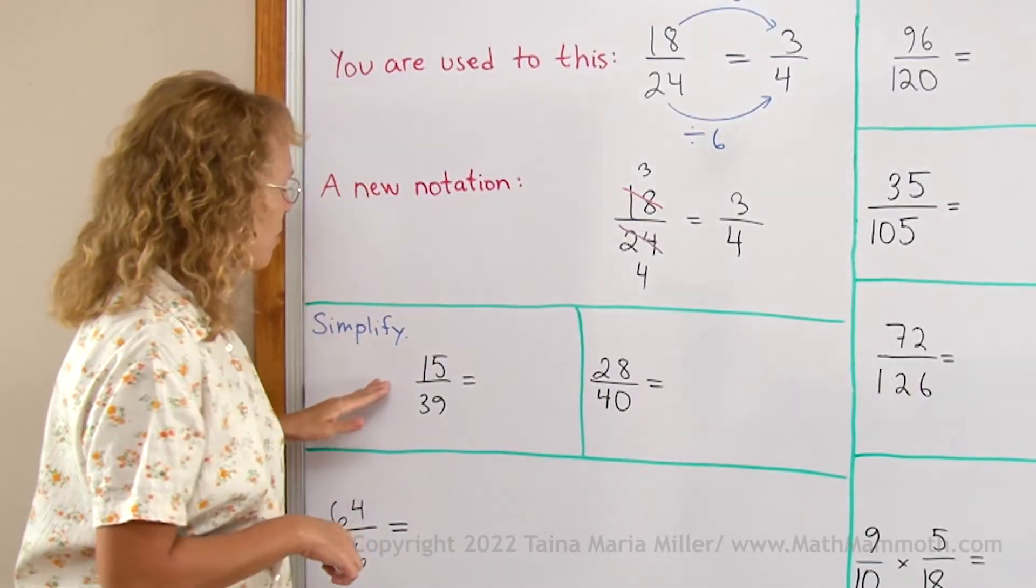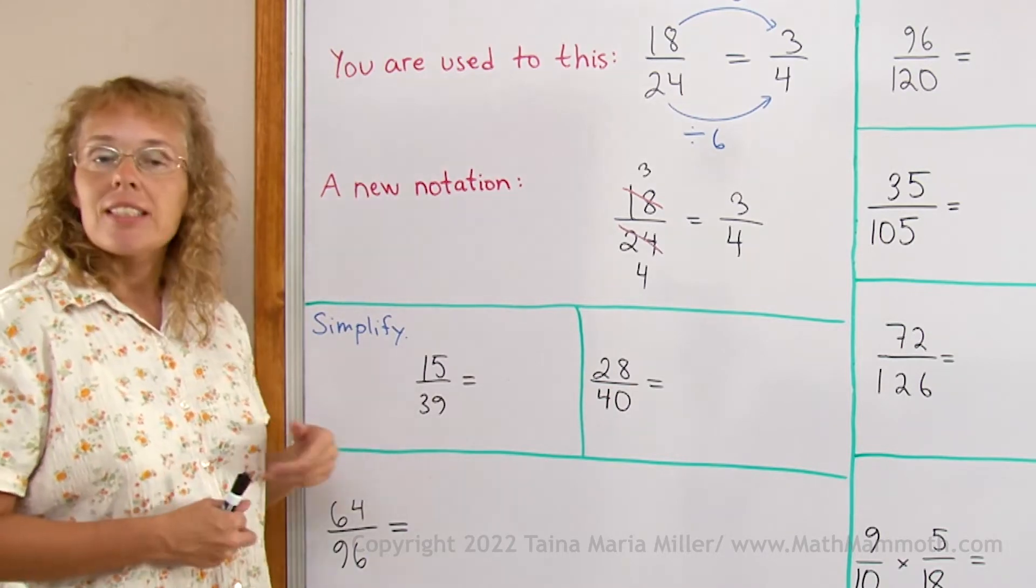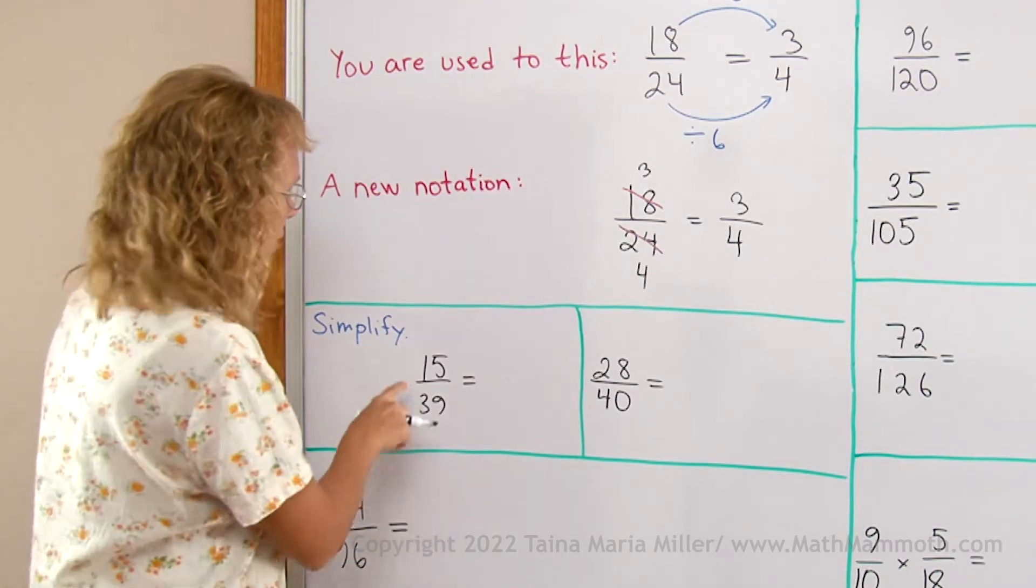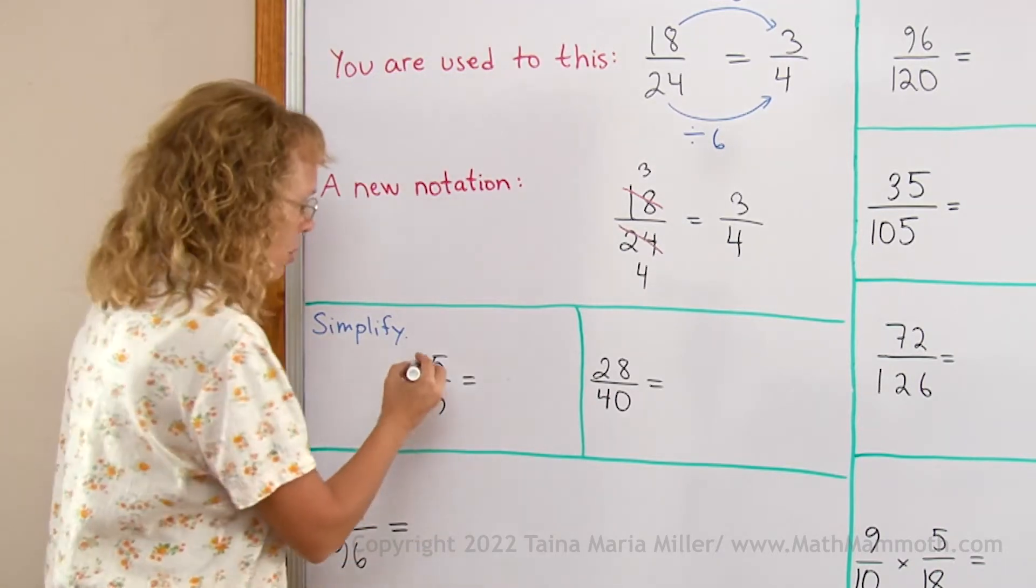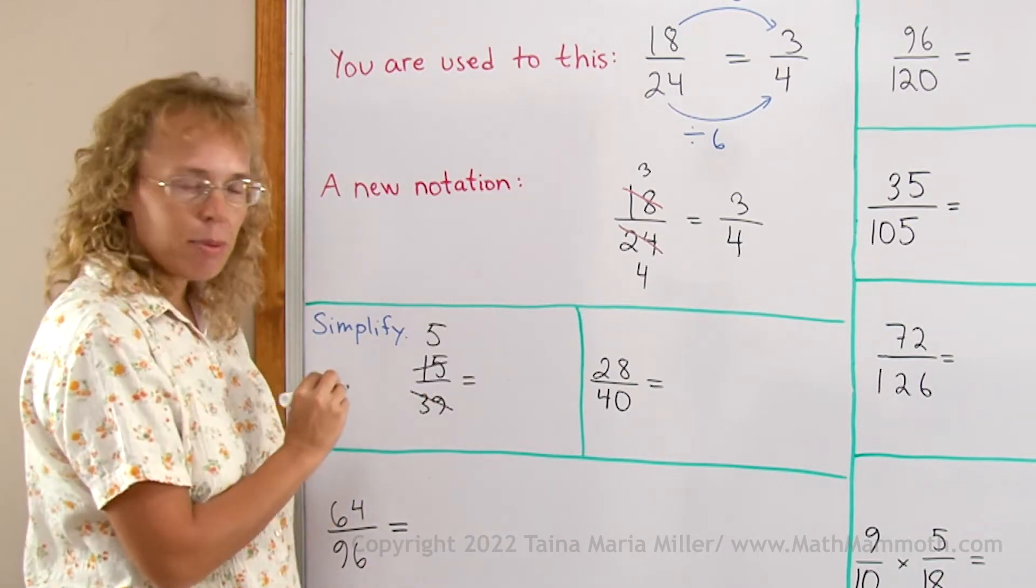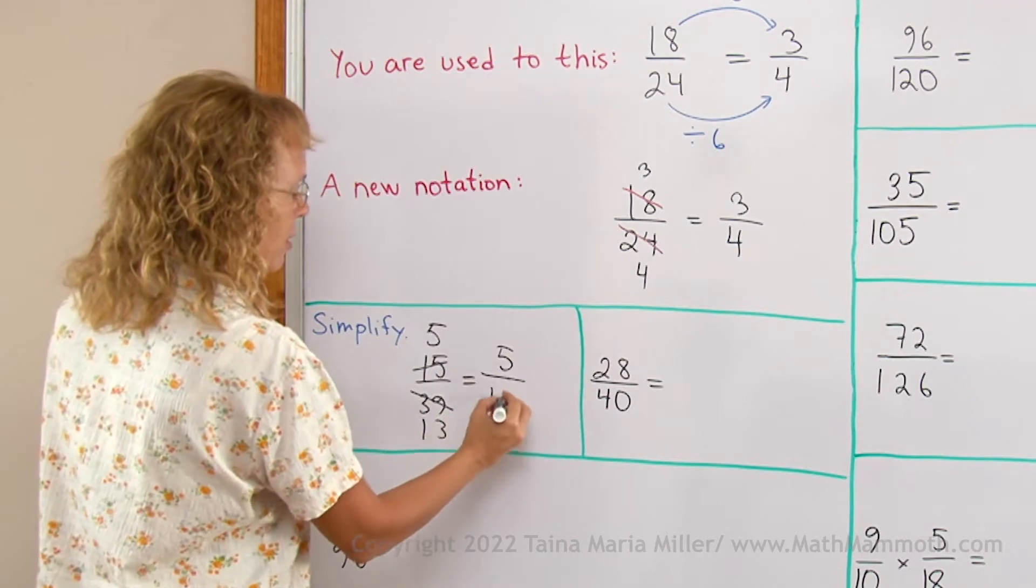Let's see how this comes about. If I'm simplifying this fraction, I notice both of these are divisible by 3. So I divide by 3 in my mind. 15 divided by 3 equals 5, so this gets replaced by 5. This divided by 3 is 13, so I get 5 over 13.